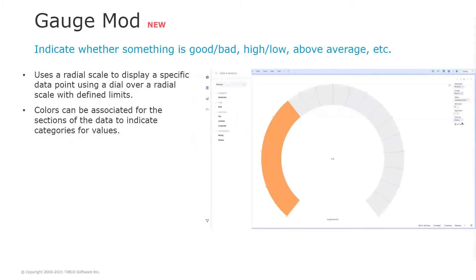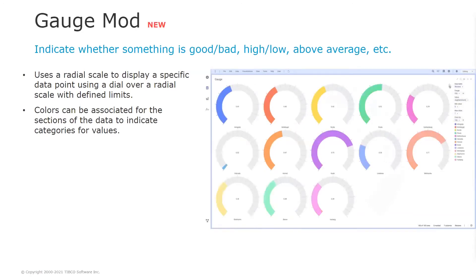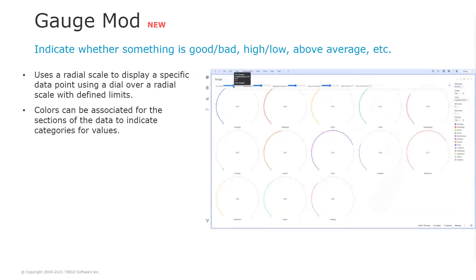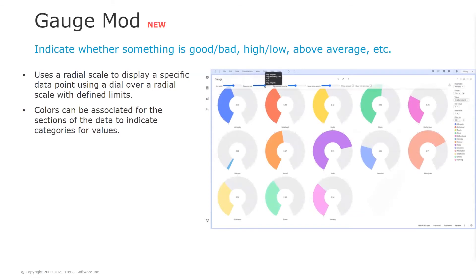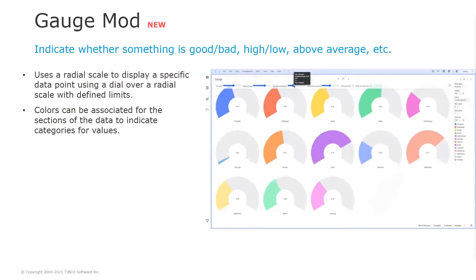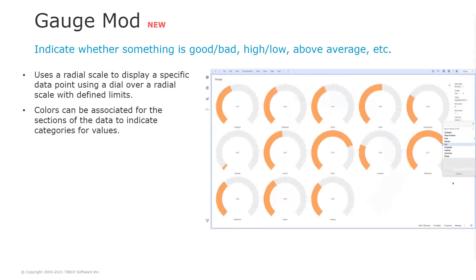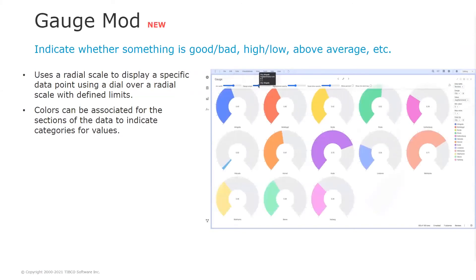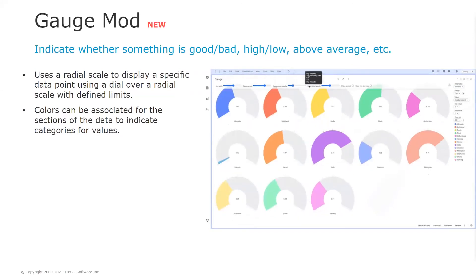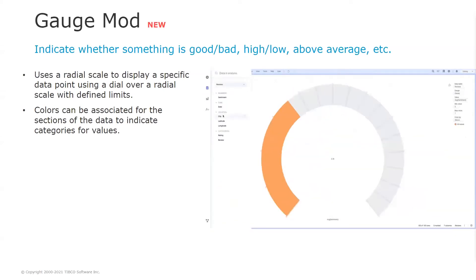We also now have a configurable gauge mod to display a specific data point using a dial over a radial scale with defined limits. This mod can be used for many different purposes, like showing speed, satisfaction, volume, temperature, or to indicate whether something is good or bad, high, low, average, or above average. It's a very nice one.